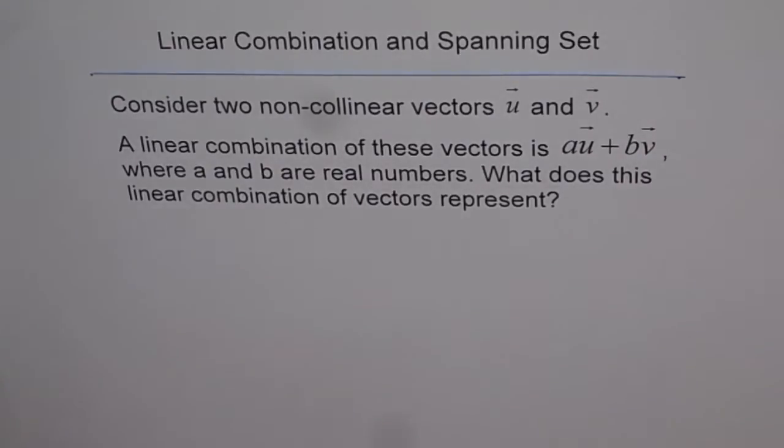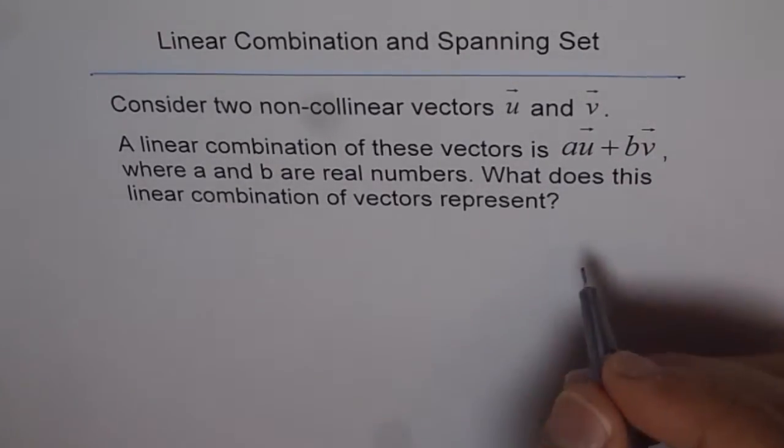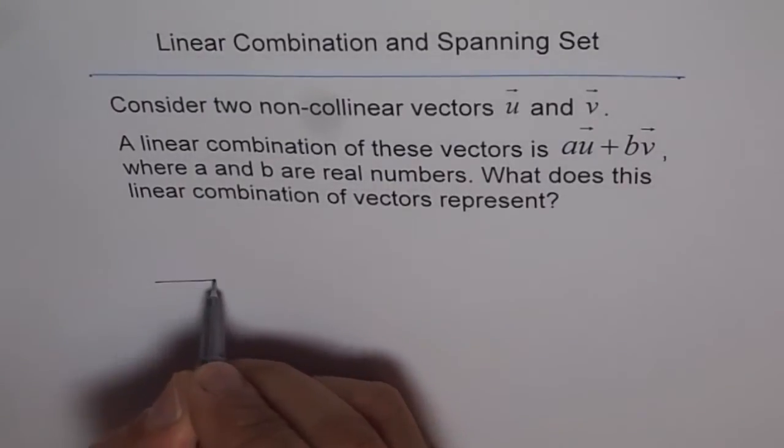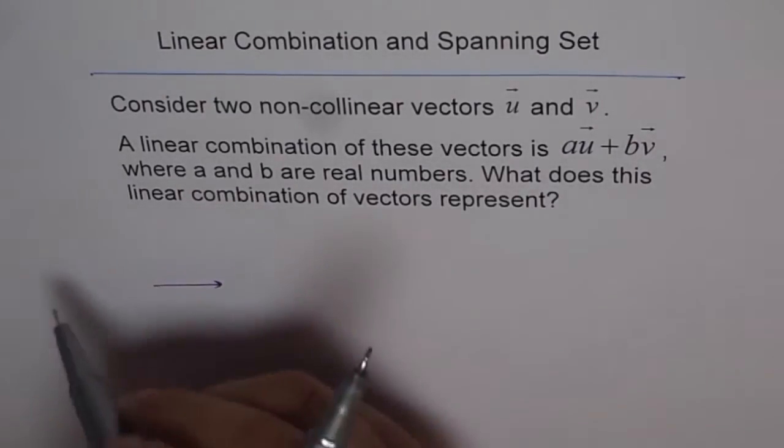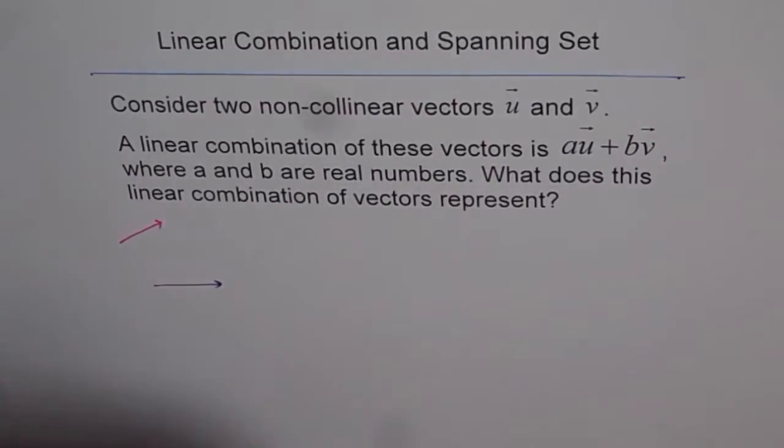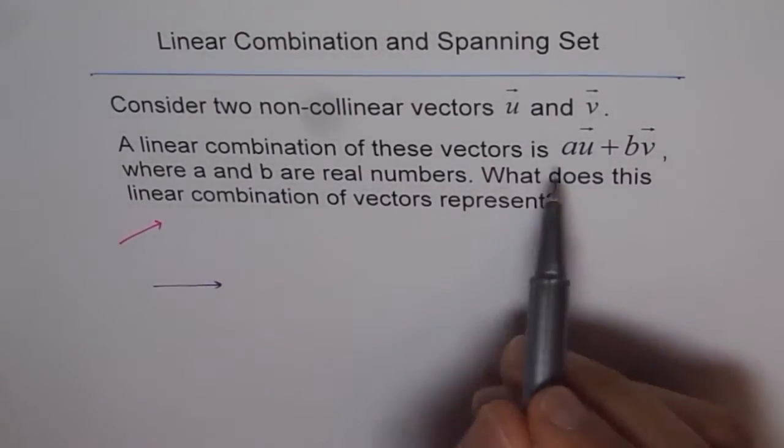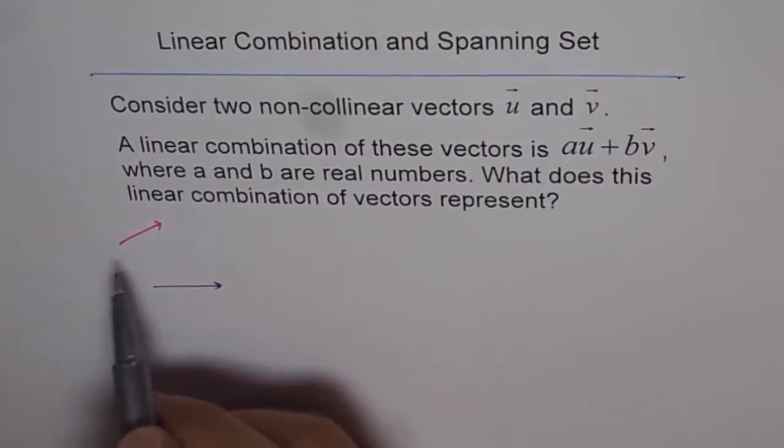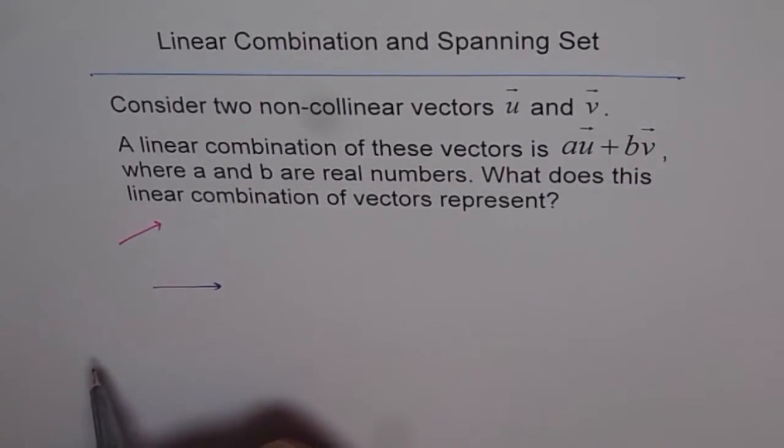It is a very interesting question. It says we have two vectors, so any two vectors. Let's consider this is my u vector and let me consider this to be vector v. When we say that we combine them in this fashion, that means scale them and combine them, then what do we get?